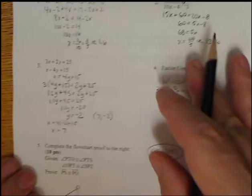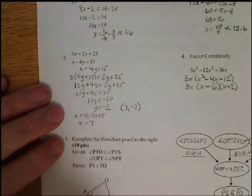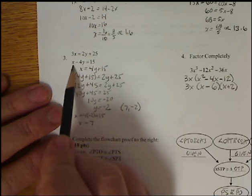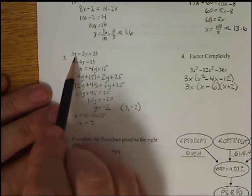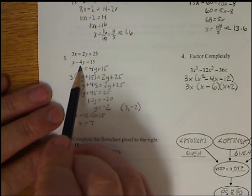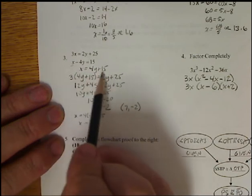For our system problem, we have two different methods. You can use elimination or you can use substitution. This one sits up best for substitution because I can solve for x in this equation, then replace it here. So my first step was I added 4y. So I have x equals 4y plus 15.